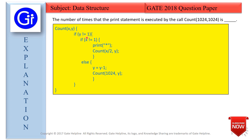If y is not equals to 1, we go inside the if condition. Inside it, we have another if condition with an else part: if x is not equals to 1, we execute two statements including the print statement. In the else part, we have a recursion call to count(1024, y). In the if block, we have the recursion call count(x/2, y).